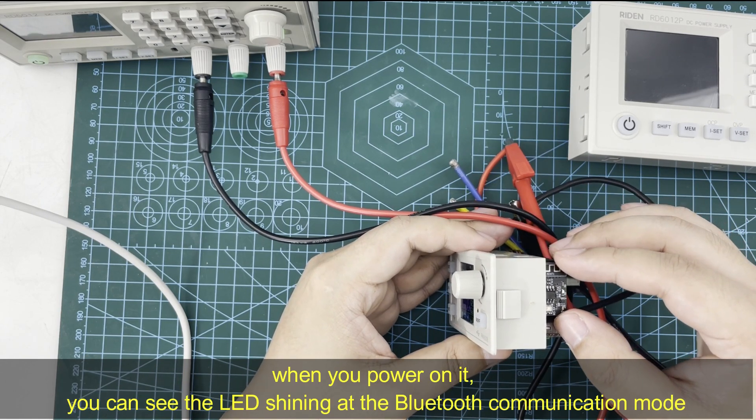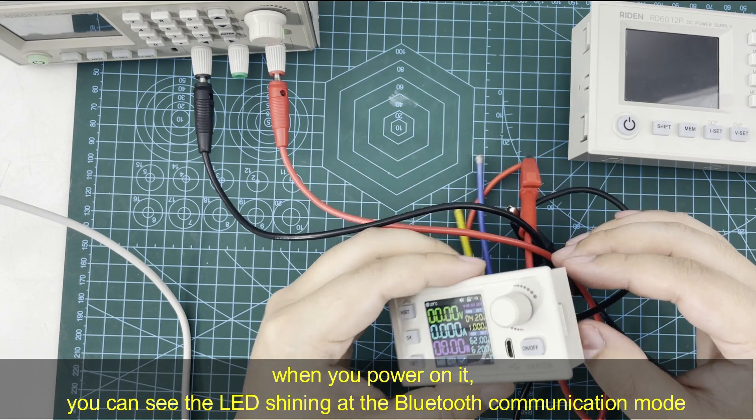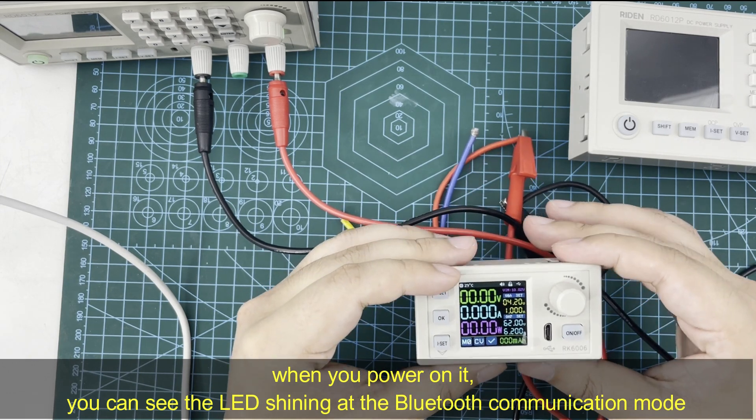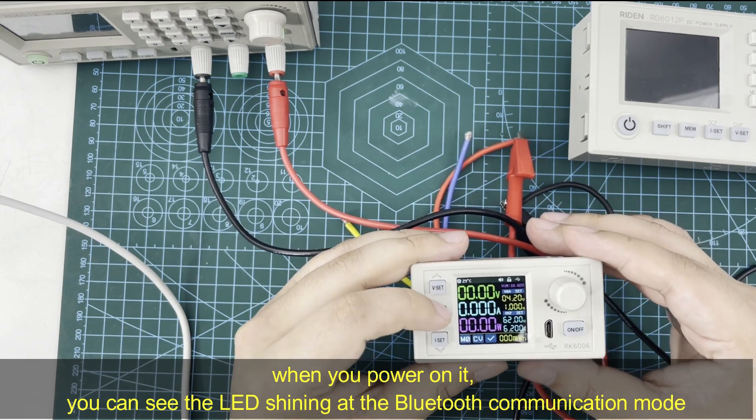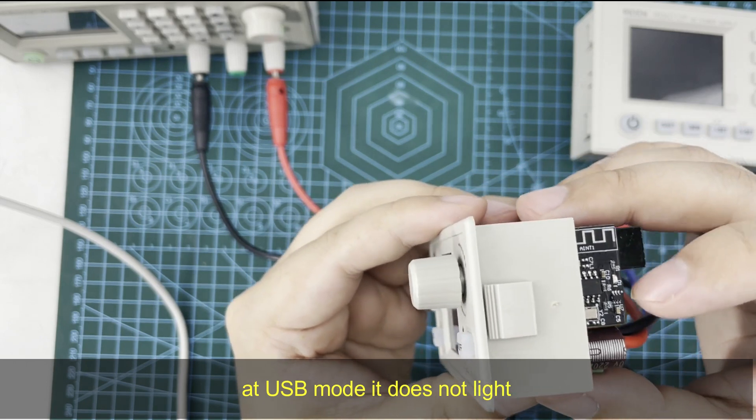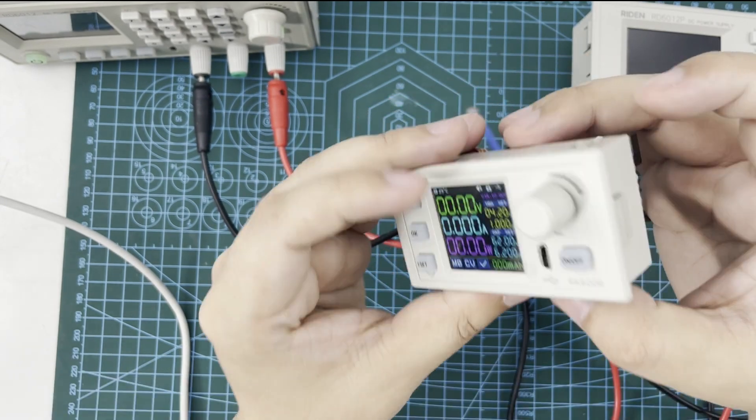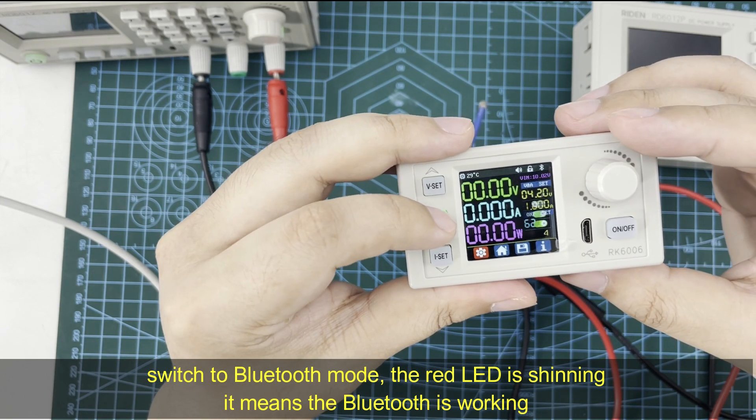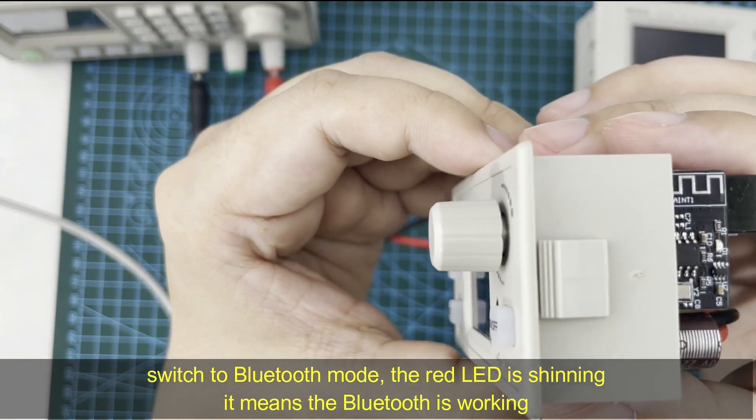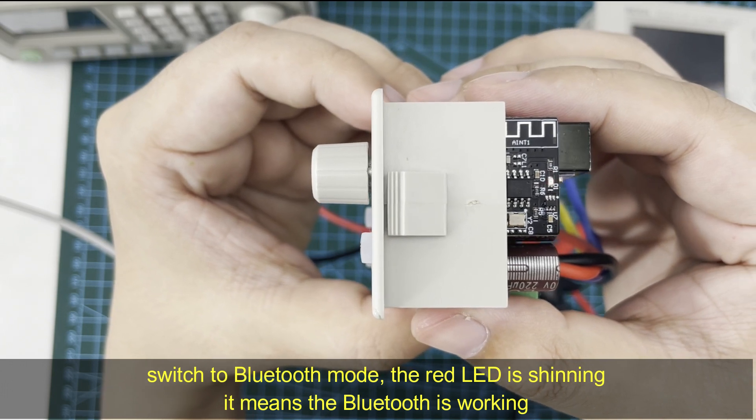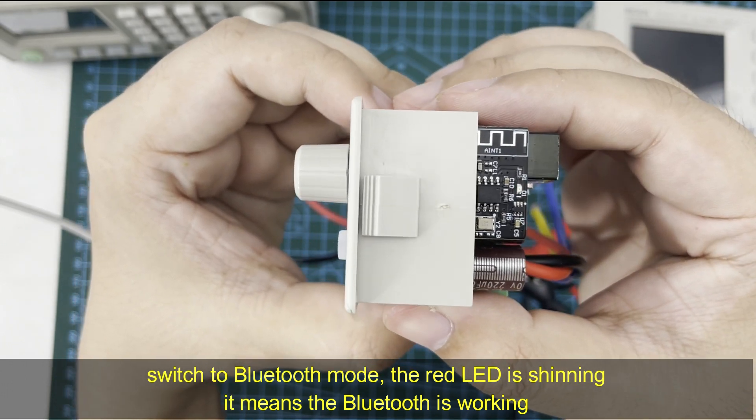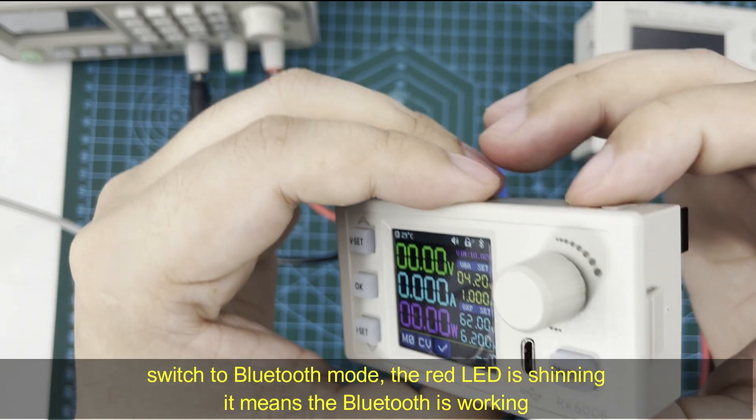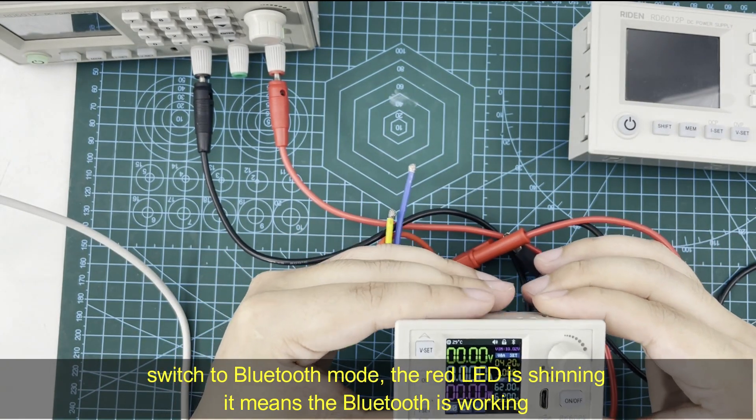When you power on it, you can see the LED shining at the Bluetooth communication mode. You can see here there is no light. And I set it to Bluetooth mode. You can see the red LED is shining. It means the Bluetooth is working.